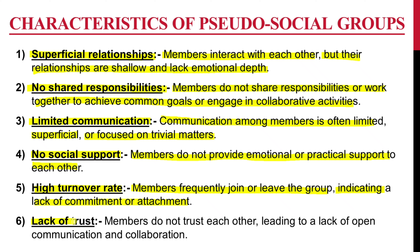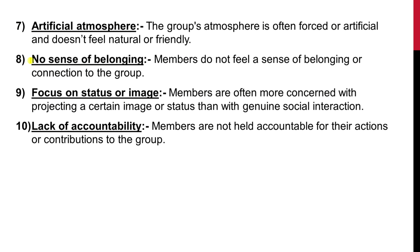Sixth is lack of trust — members do not trust each other, leading to a lack of open communication and collaboration. Seventh is an artificial atmosphere — the group's atmosphere is often forced or artificial and doesn't feel natural or friendly. Eighth is no sense of belonging — members do not feel a sense of belonging or connection to the group. Ninth is focus on status or image — members are often more concerned with projecting a certain image or status than with genuine social interaction.